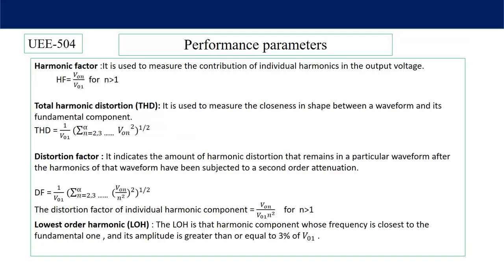Performance parameters of inverters. The quality of the output voltage and output current — these parameters are very important. Harmonic factor is used to measure the contribution of individual harmonics in the output voltage, that means how much amount of third harmonic, fifth harmonic, or any other harmonic is present. The harmonic factor equals V_0N divided by V_01, where V_0N is the RMS output voltage of the Nth harmonic and V_01 is the RMS output voltage of the fundamental harmonic, for N greater than 1.